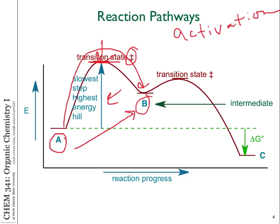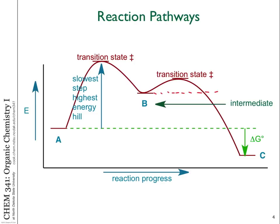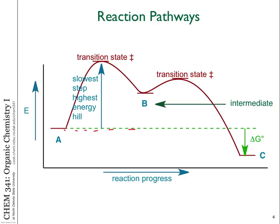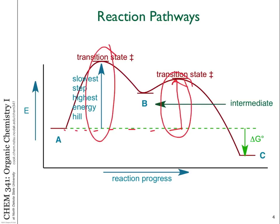There are two steps in the reaction shown here. Once you form B, then it can go and form C. There's also an energy barrier from B to C. If you've already achieved state B, it takes a lot less energy to get from B to C than it does to get from A to B. So which of those steps is going to be faster? The second step is going to be a lot faster than the first one. The higher the energy barrier you have to go over, the slower the reaction is.